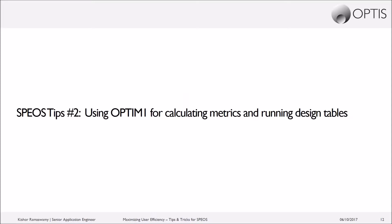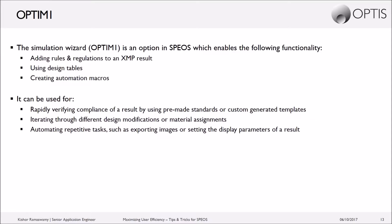The second tip that we'll talk about today uses an Optum One module, which is an option that can be added to your license. It's used for calculating pass-fail criteria of different metrics and also running what we call design tables for optimization through iterations. This particular option is called the simulation wizard and it enables three discrete functionalities.